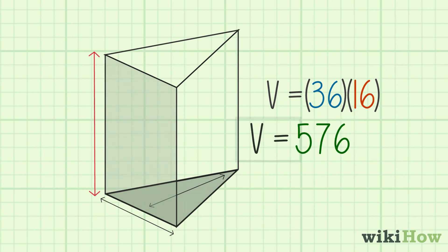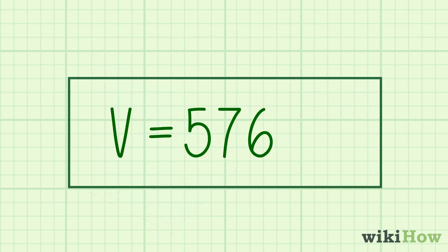Therefore, the volume of the triangular prism is 576. Write your answer in cubic units.